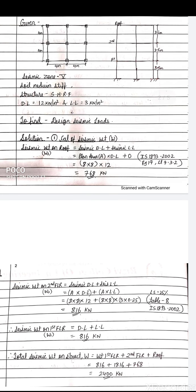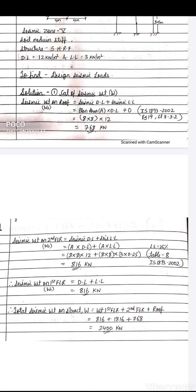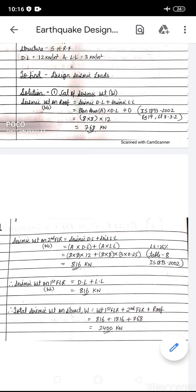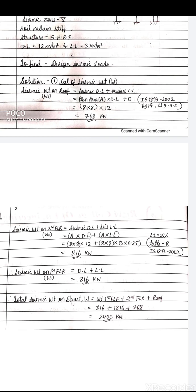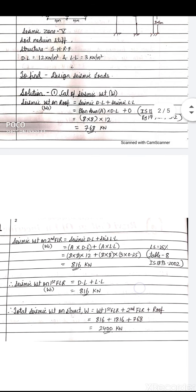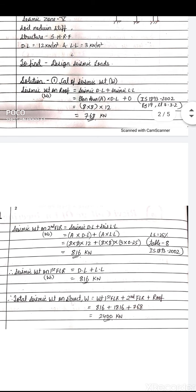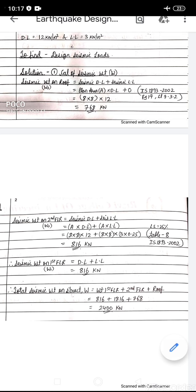Now, seismic weight on the second floor is given by dead load plus live load. Seismic dead load = 8×8 × 12, and seismic live load = 8×8 × 3 × 0.25. The factor 0.25 means we take 25% of the live load. As per IS code Table 8, when live load is less than or equal to 3 kN/m², we take 25% of the live load; when greater than 3 kN/m², we take 50%.